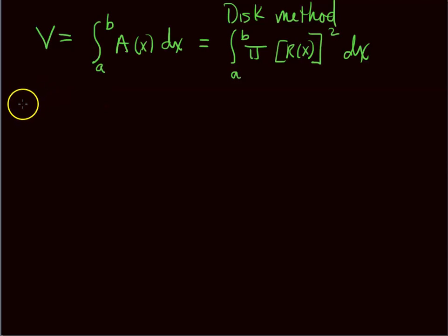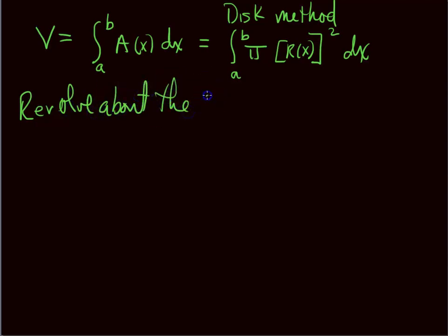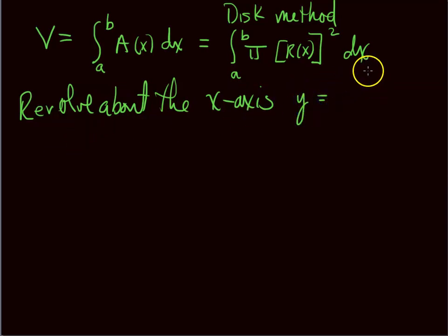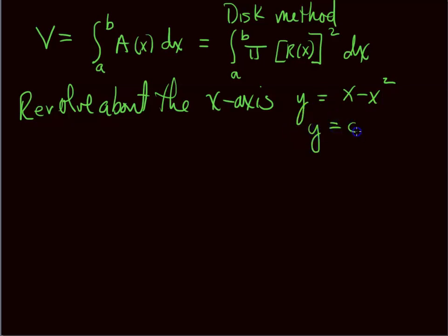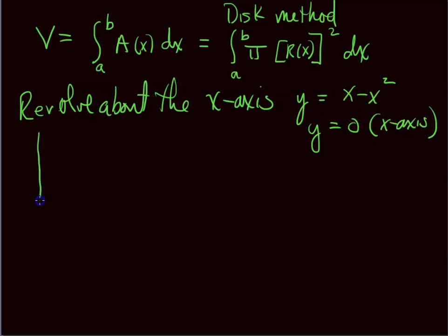Another example: revolve the function y = x − x² about the x-axis, bounded by y = 0. We need to know what plane we're revolving around. Let's draw a picture.